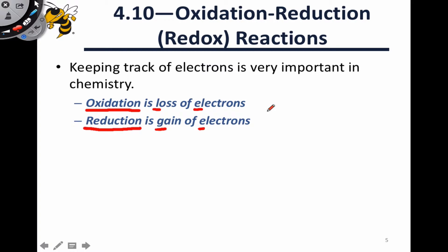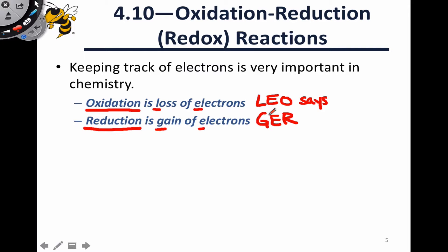You may have heard a mnemonic to remember this: loss of electrons is oxidation — LEO says gain of electrons is reduction — GER. So 'LEO the lion says GER' can help you keep in mind that losing electrons is oxidation, gaining electrons is reduction. Even I have to use this mnemonic from time to time.